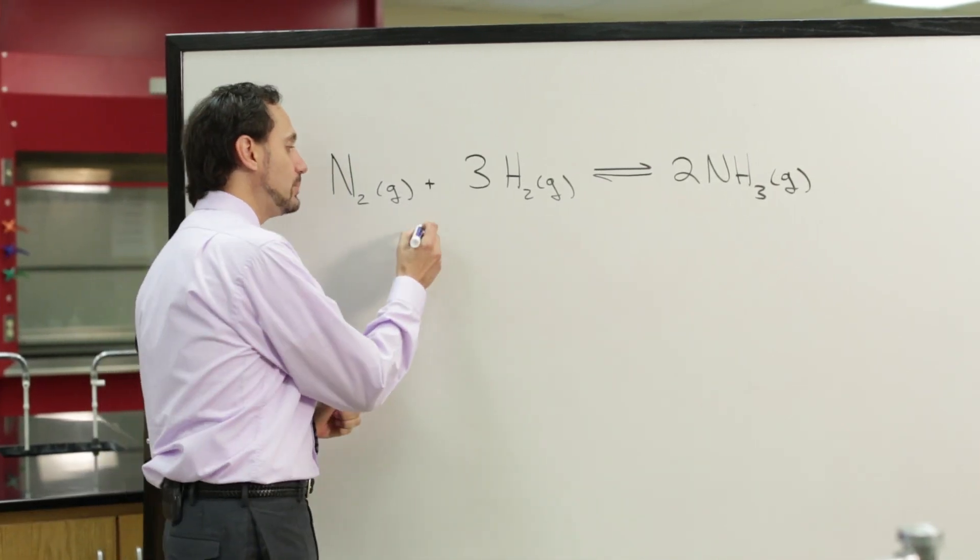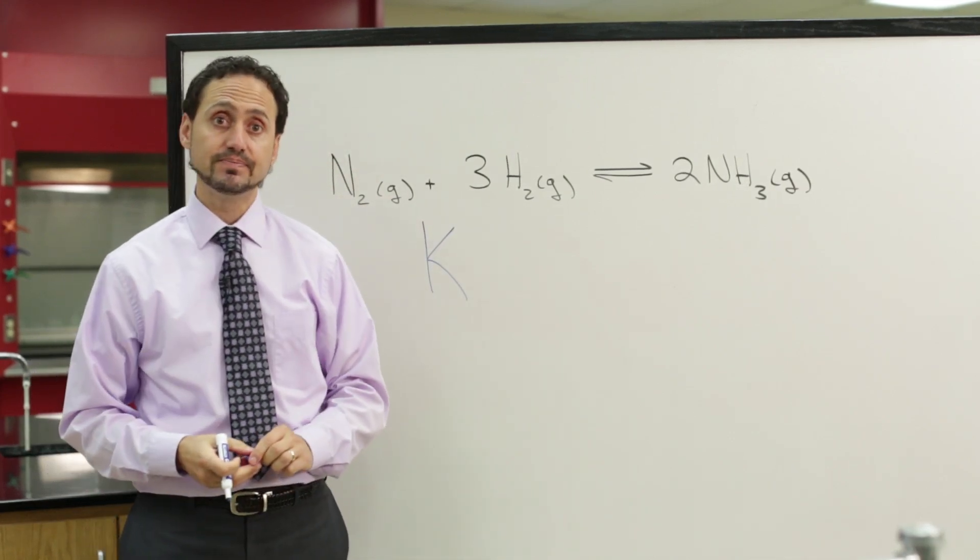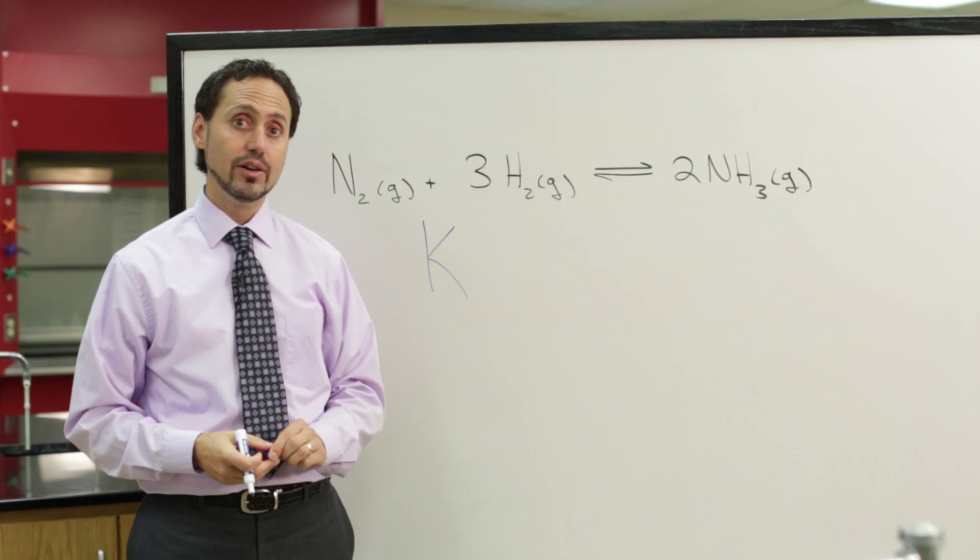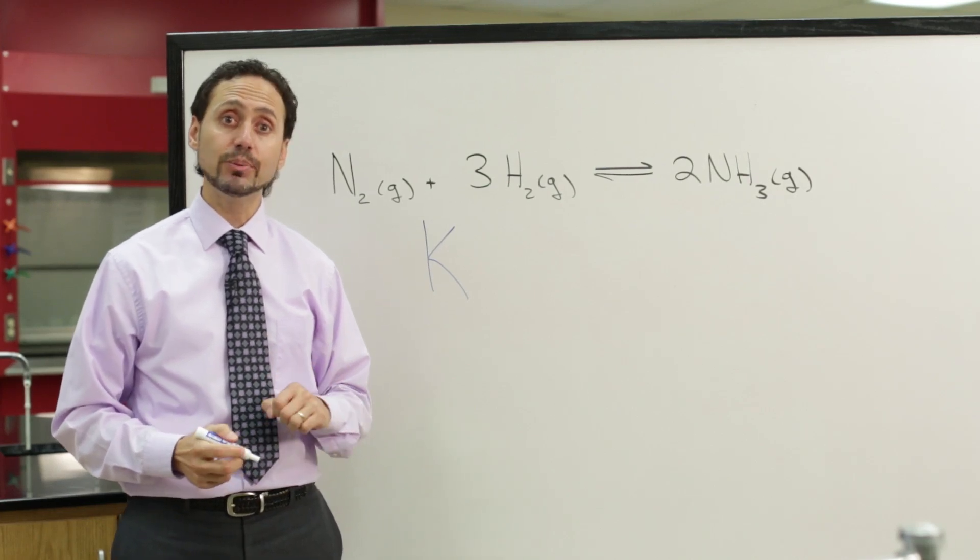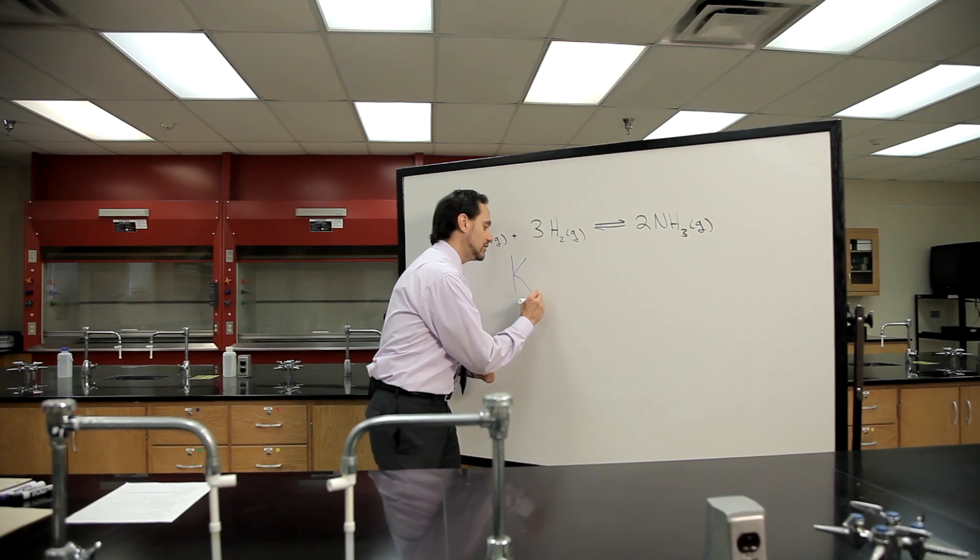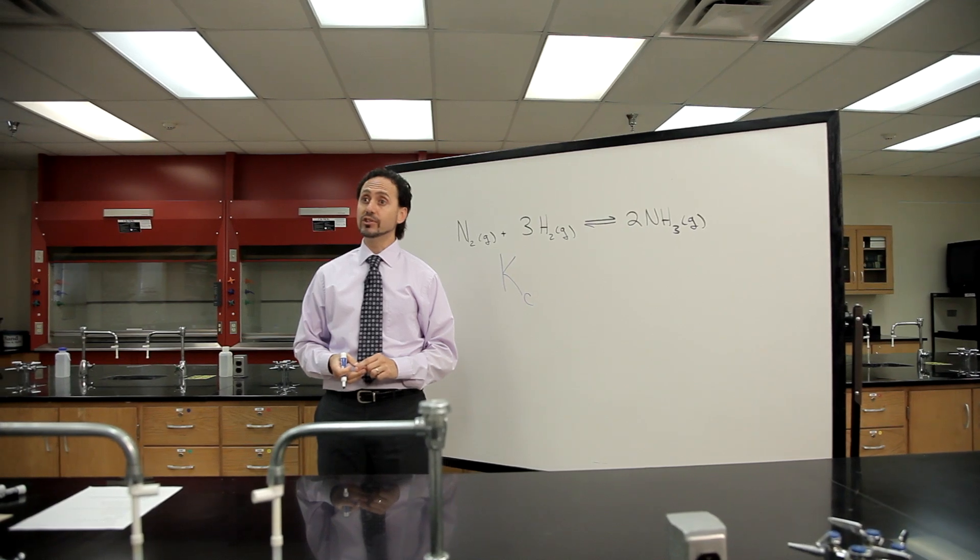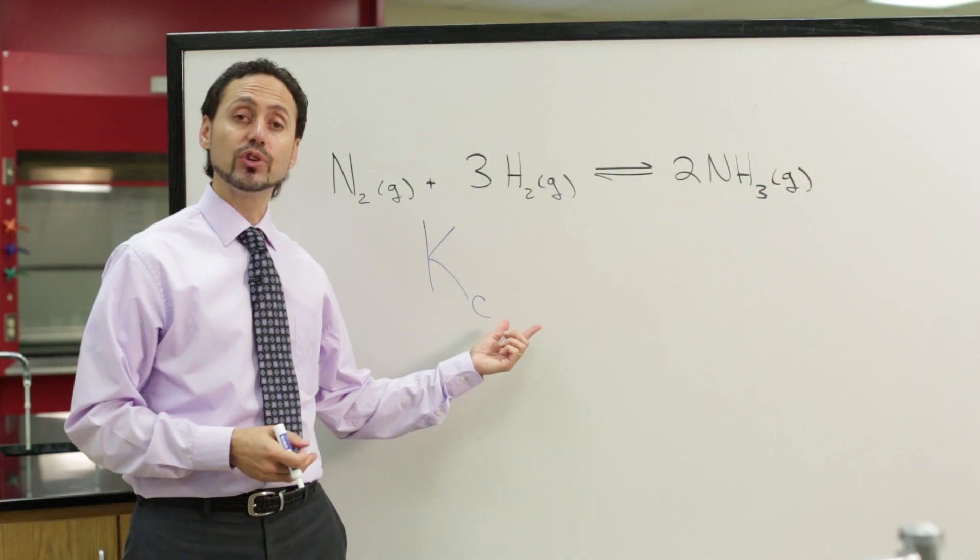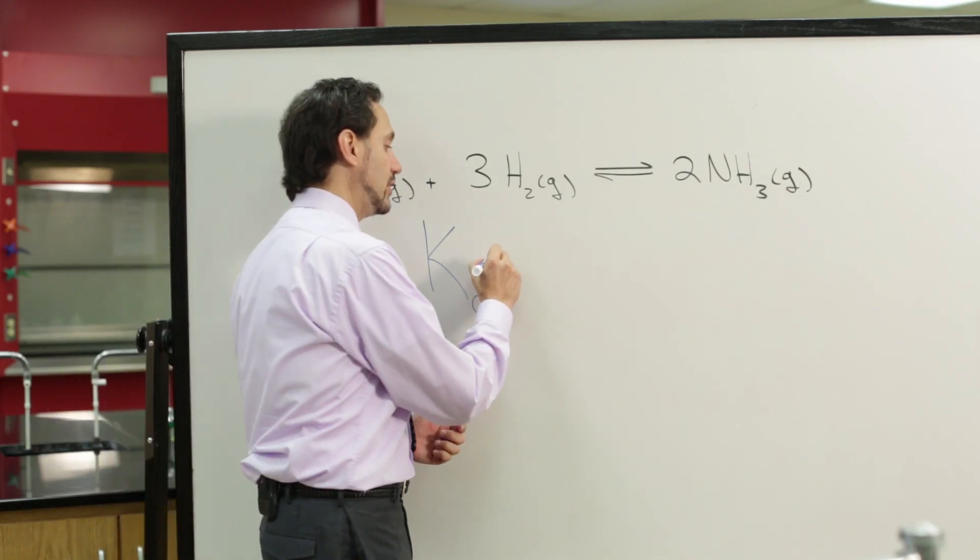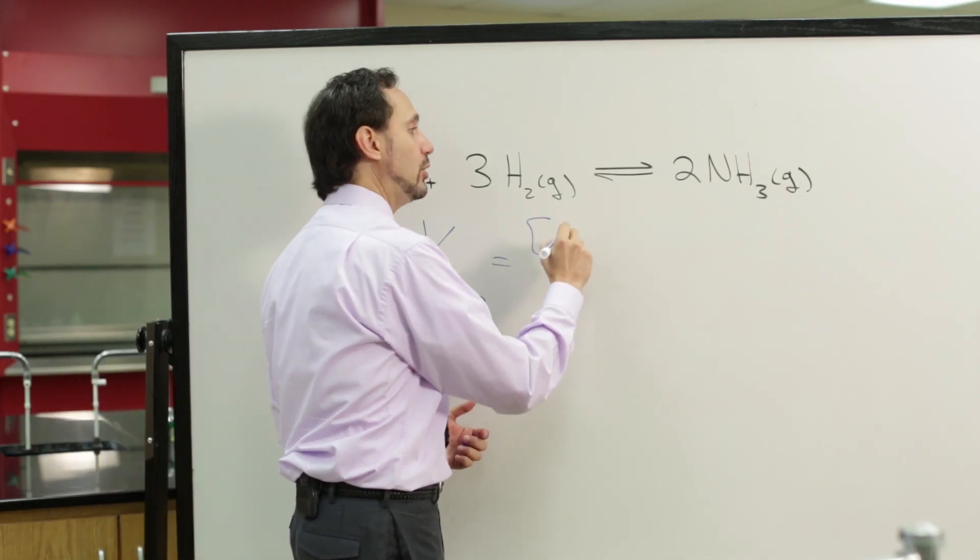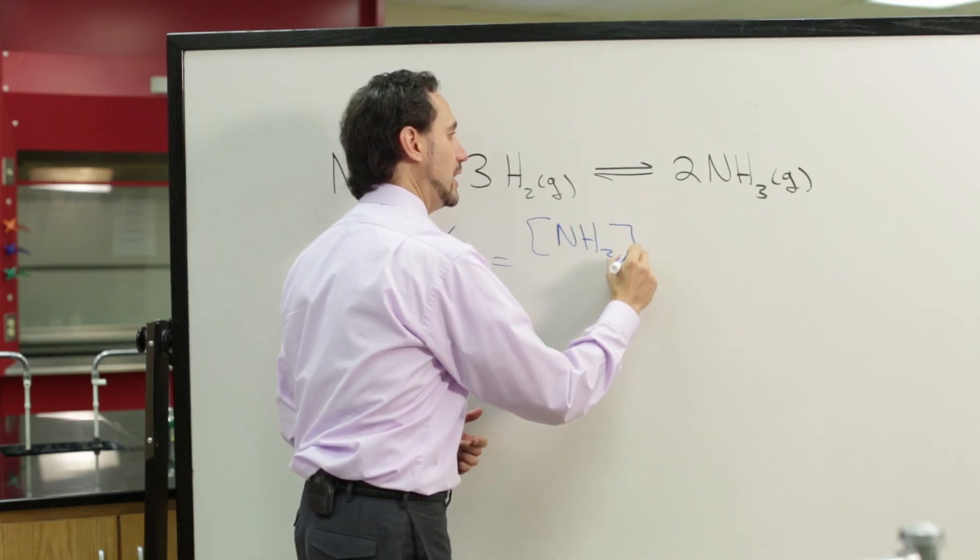Now, when we introduced the equilibrium constant, I simply used a K, capital letter K. But we can be more specific by giving the K a subscript. So, in this case, we can give the K a subscript of lowercase letter C. That C stands for concentrations, because when we wrote the equilibrium constant expression, we wrote it using the concentrations of the products and the reactants.